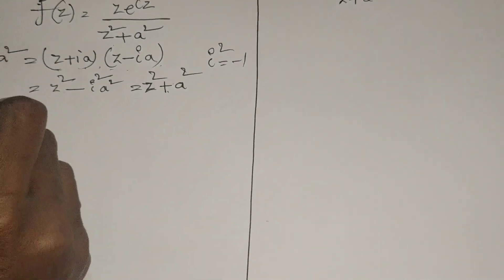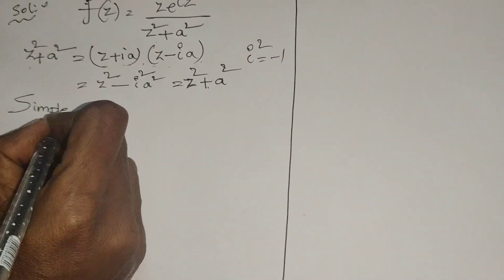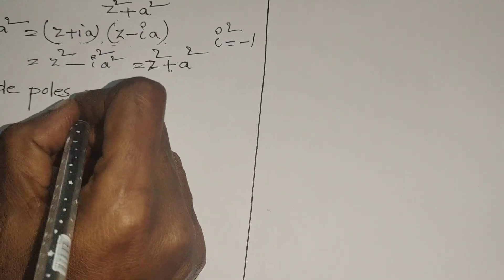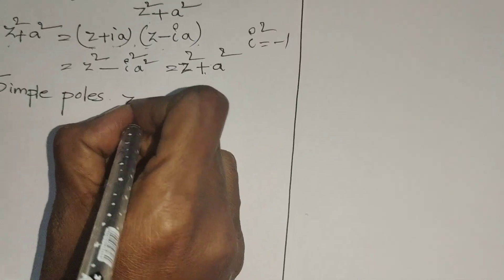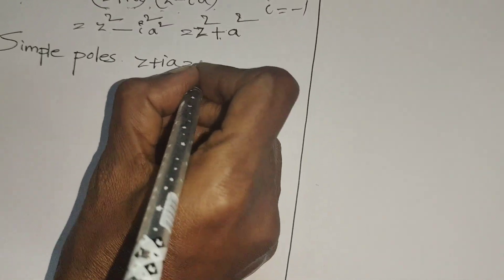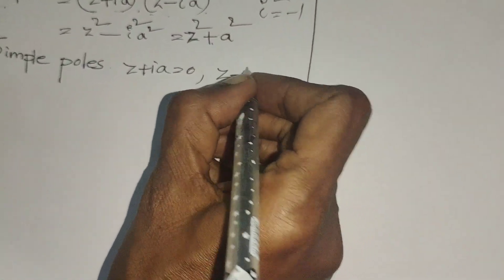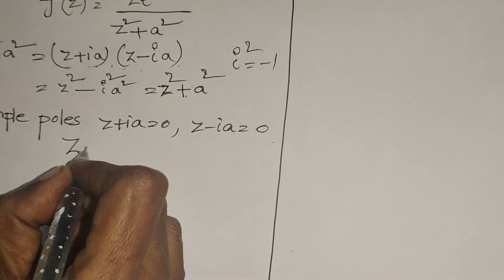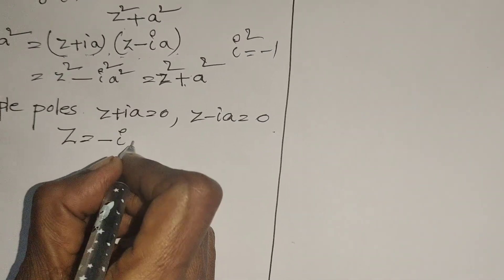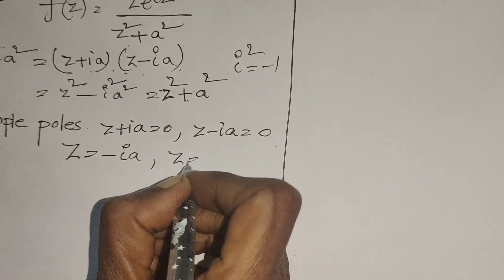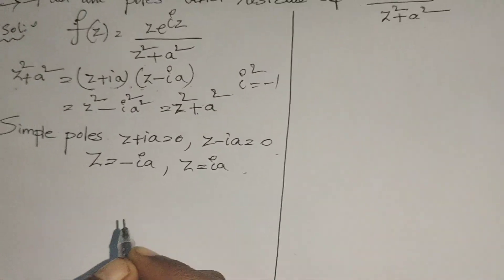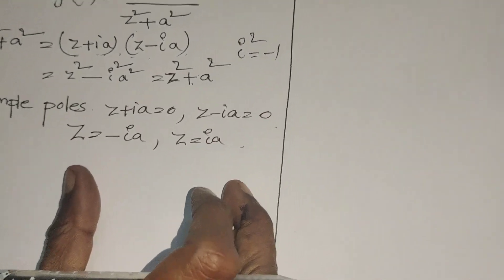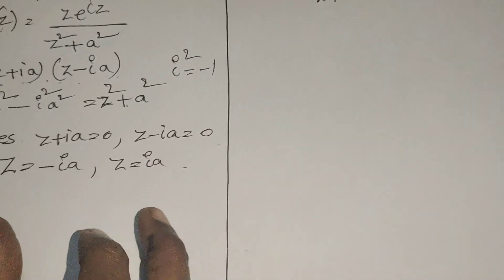Now find out the simple poles. Setting z + ia = 0 gives z = -ia, and setting z - ia = 0 gives z = +ia. These are the two simple poles.